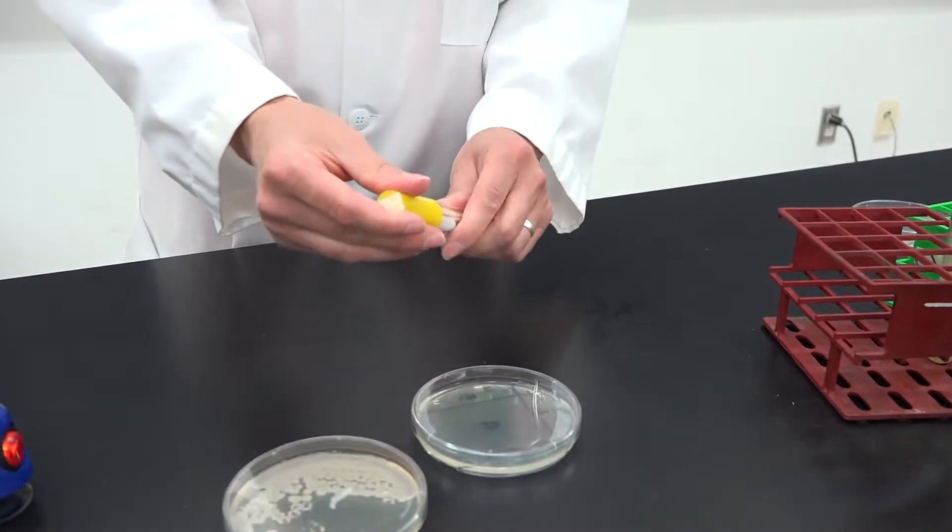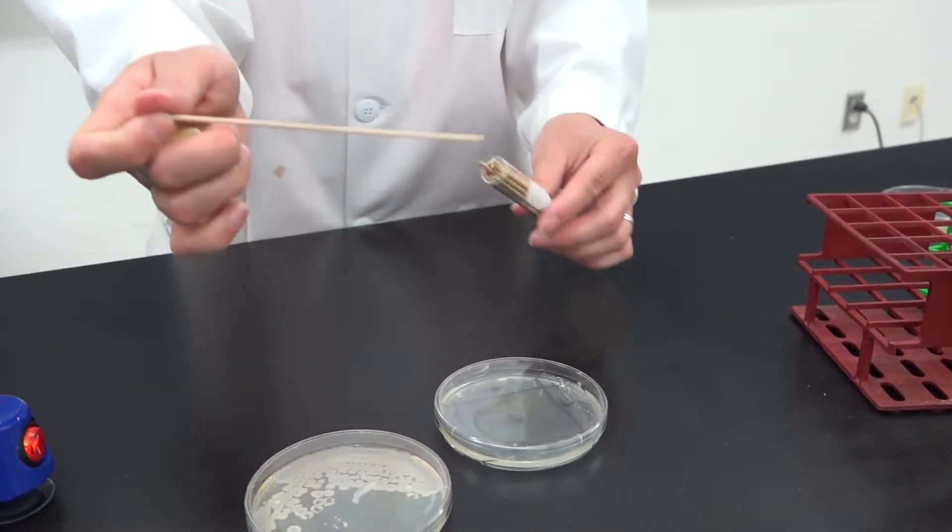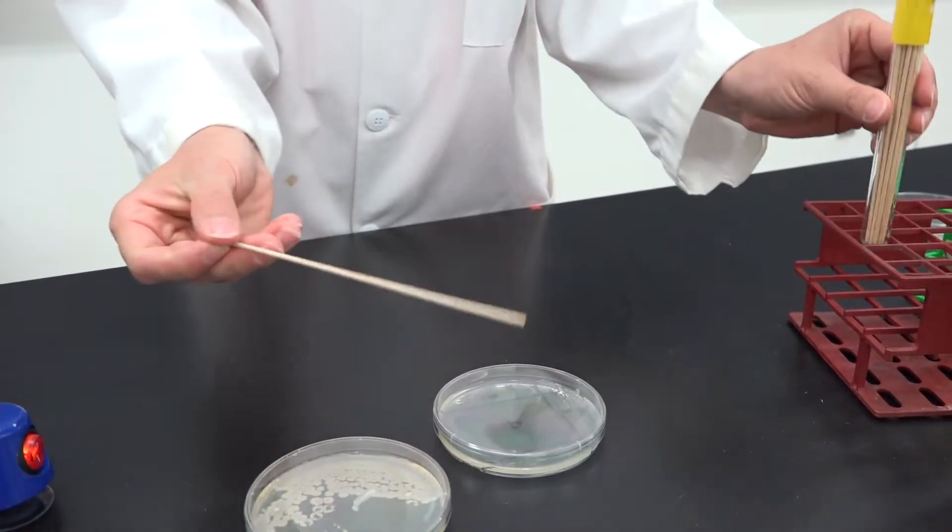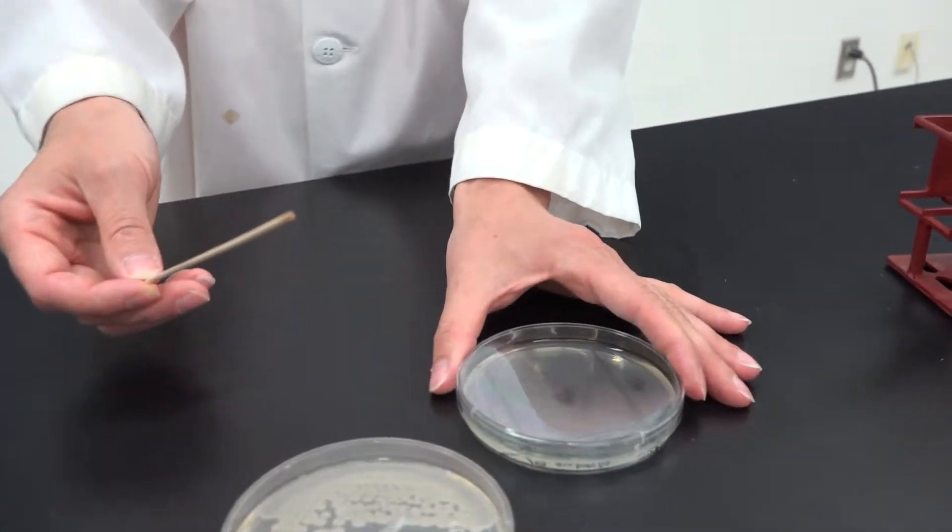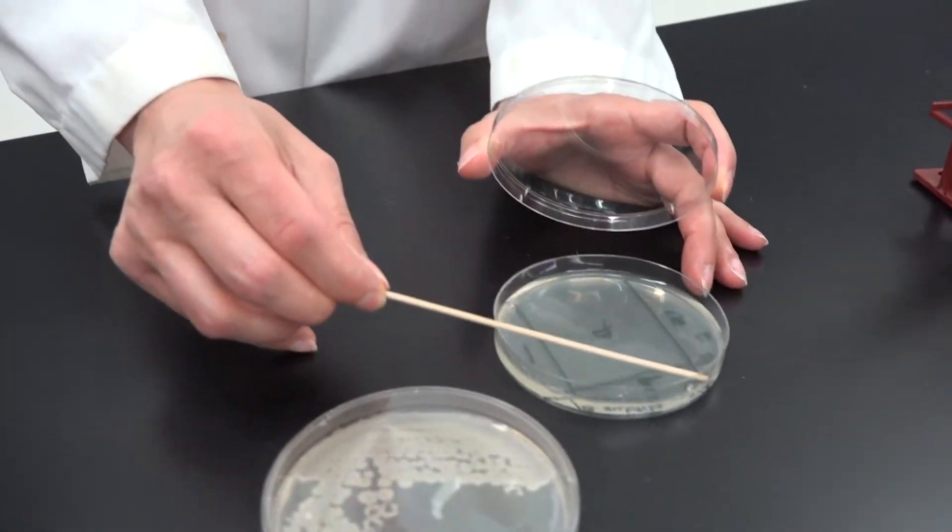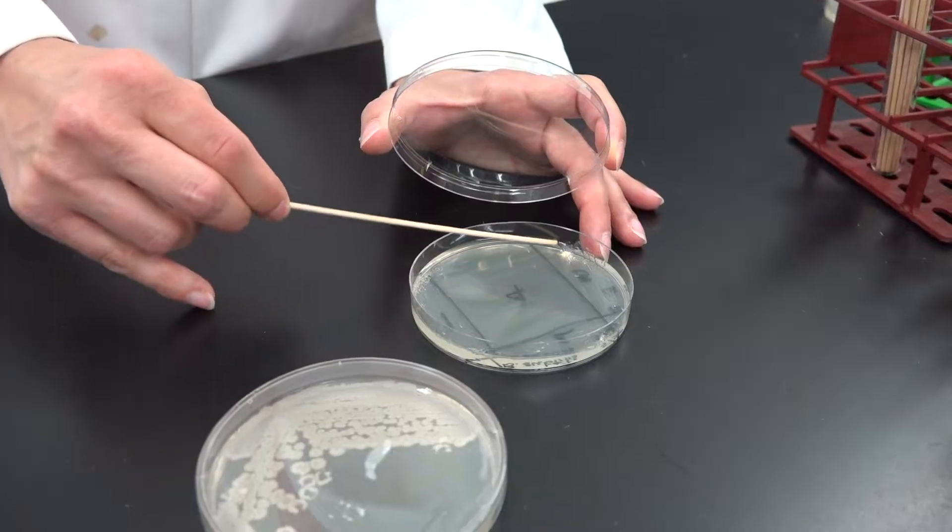Retrieve a third sterile stick from the tube, turn the plate 90 degrees, and spread the bacteria from quadrant two into quadrant three. Be sure not to press too hard so that you don't tear the agar.